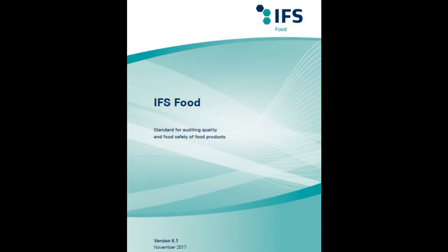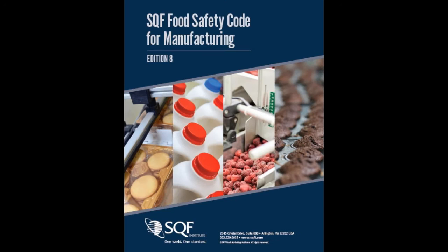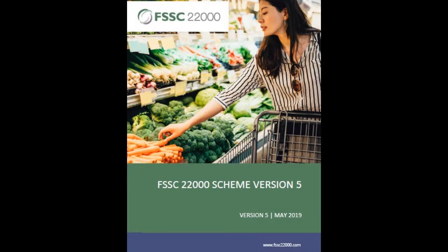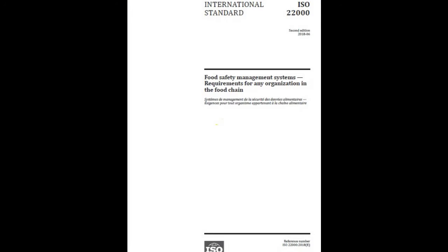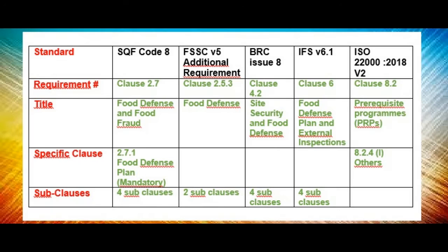Out of many GFSI approved standards, I will quote 4 main standards which are known by food experts here in Pakistan, along with one non-GFSI standard, i.e., ISO 22000, which is very common and most used in industries for compliance and certification. Here you can see the chart — the first 4 columns are GFSI approved standards and the 5th column is FSMS.